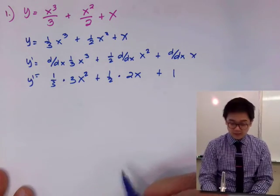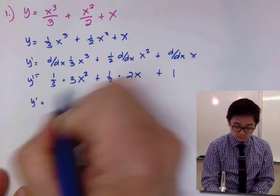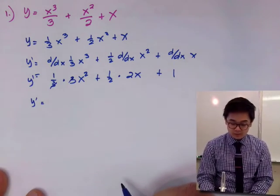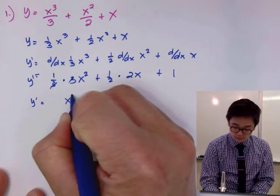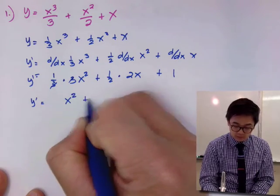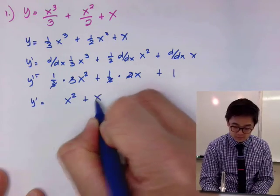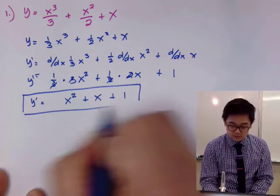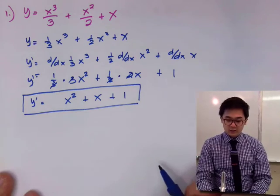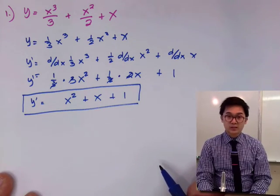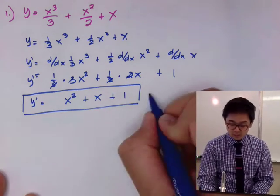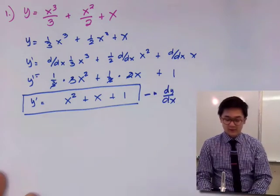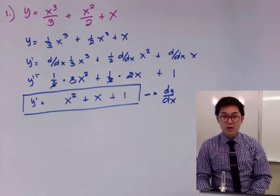Now we just need to simplify our answer. One third times 3 cancels to give 1, so we get x squared. One half times 2 also cancels, giving x plus 1. This is the derivative, which can also be written as dy/dx — another notation for y prime.